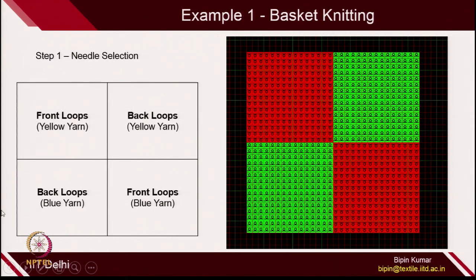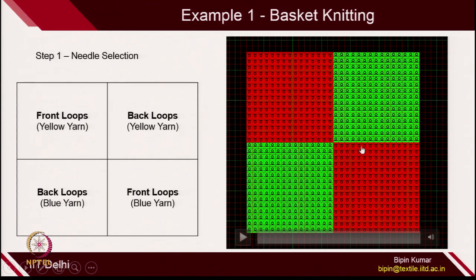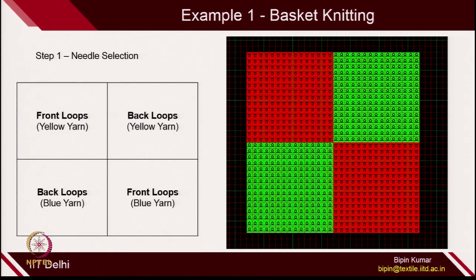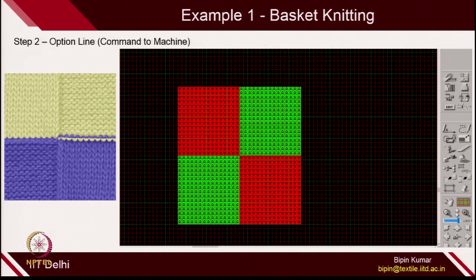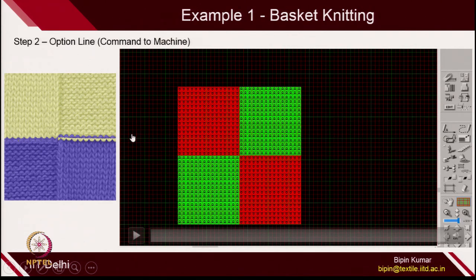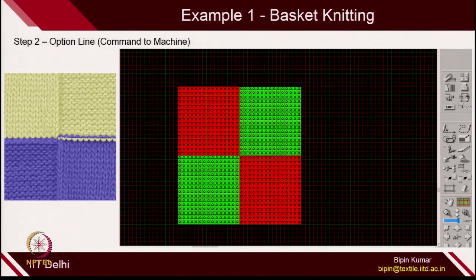Once this is done, you have only selected the needle, but the machine does not know which portion requires blue yarn and which requires yellow yarn. You have to give a command to the machine specifying which feeder to use for which number of courses. That's called the option line. Once the pattern is ready, you create options commands for the machine using design software. Certain courses use blue yarn and certain courses use yellow yarn, and the machine needs to be told this command.